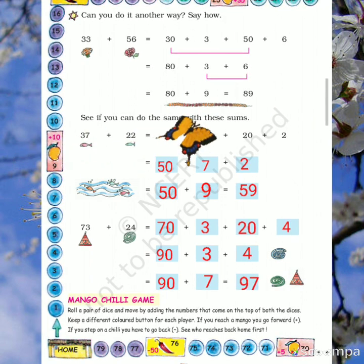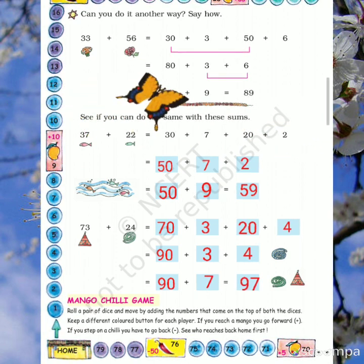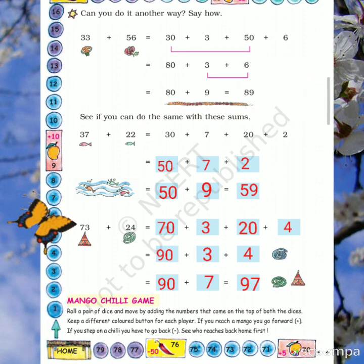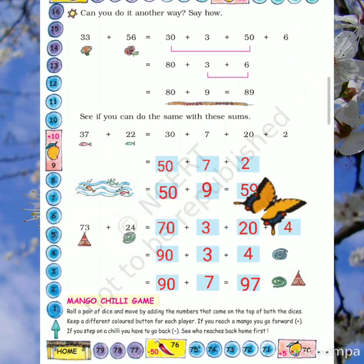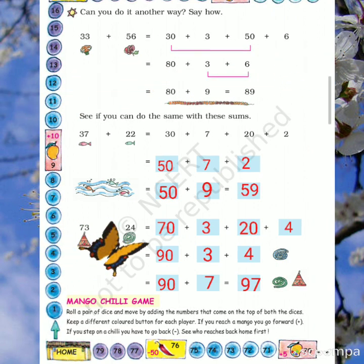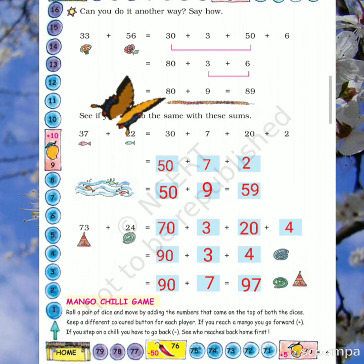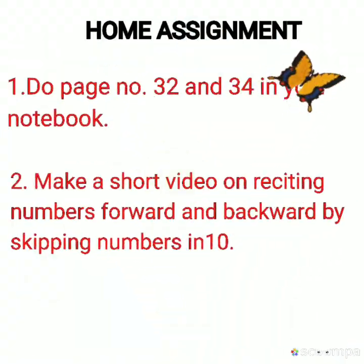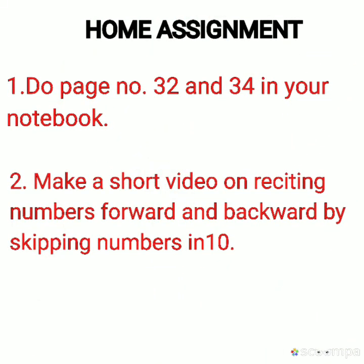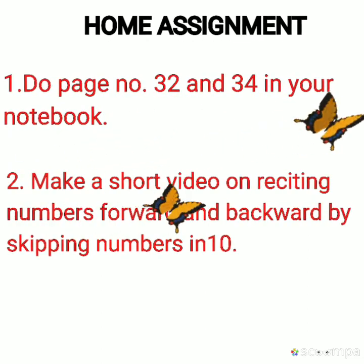Now solve these questions also: 37 plus 22 and 73 plus 24. Let me explain 37 plus 22. Write 37 as 30 plus 7, and 22 as 20 plus 2. Add 30 and 20 to get 50. Then 7 plus 2 is 9. So 50 plus 9 equals 59. Do these questions in your notebook as well.